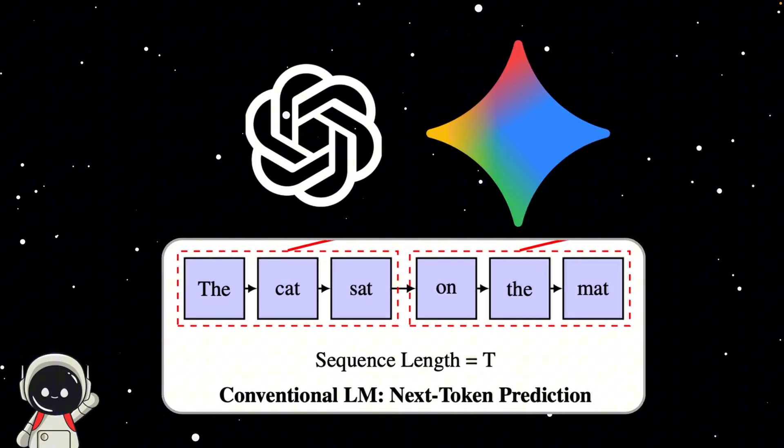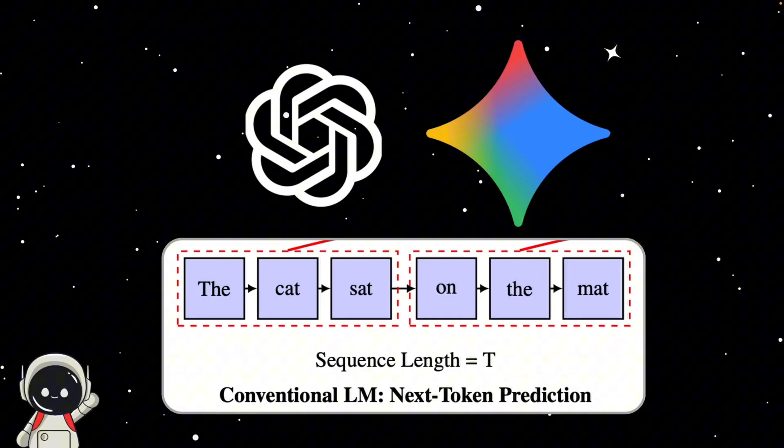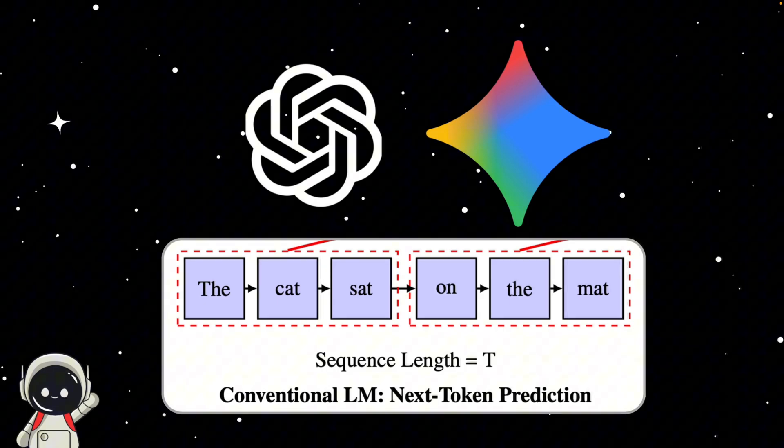Let's start with what's wrong with the way today's models talk. When ChatGPT or Gemini answers you, it doesn't actually know the whole sentence in advance. It's guessing one chunk at a time based on what came before. Every word, every punctuation mark is one prediction after another. That means even the biggest, smartest models are still crawling through text one tiny step at a time. Each of those steps only carries a little bit of meaning, about 15 bits of information, according to researchers.